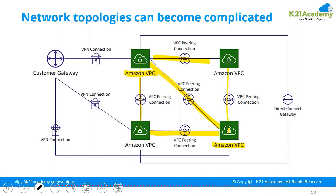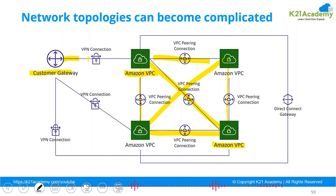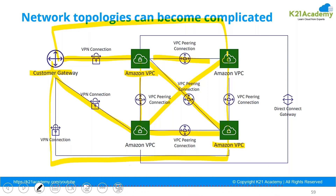For A and C to communicate, you need to create a VPC peering between them as well. So if you have four VPCs and want them all communicating with each other, you need to create a full mesh of VPC peerings. If you also have an on-premises location, you need a separate VPN from each VPC, and a Direct Connect adds yet more connectivity — so many connections.